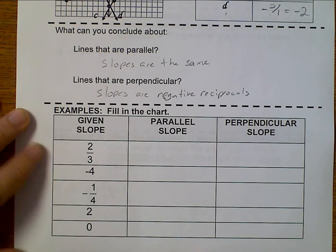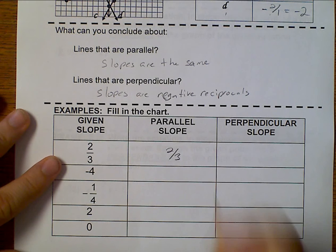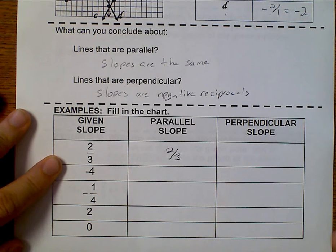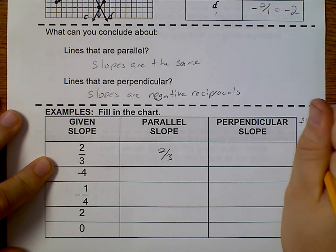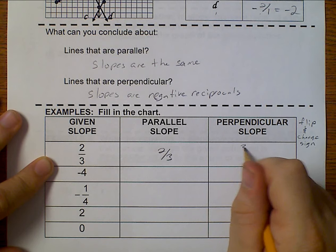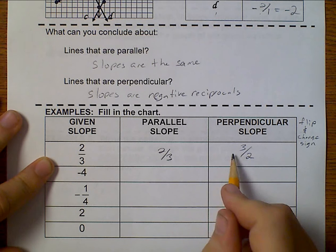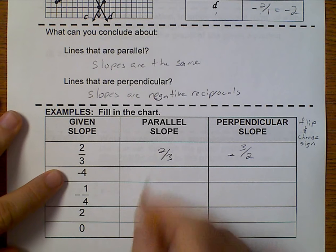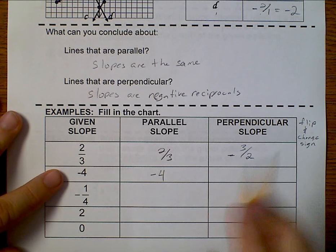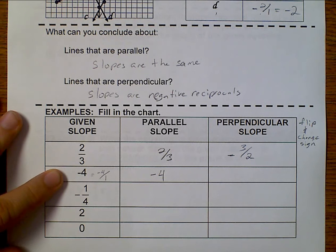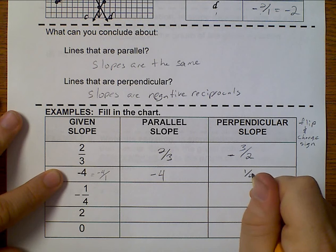So if I'm given 2 thirds, a parallel slope is also 2 thirds. To get the perpendicular slope, I have to flip and change sign. So when I flip it, it becomes 3 over 2. I change the sign and make it negative. Well, a parallel slope would also be negative 4. Now here, in order to flip it, I've got to turn this into a fraction. So this is the same as saying negative 4 over 1. So when I flip it, I get 1 fourth, and the negative becomes positive.